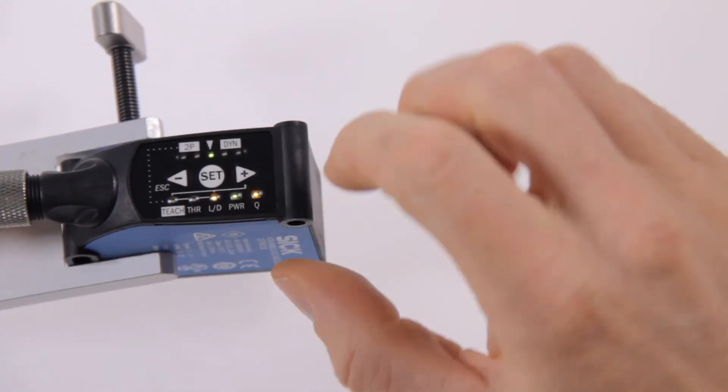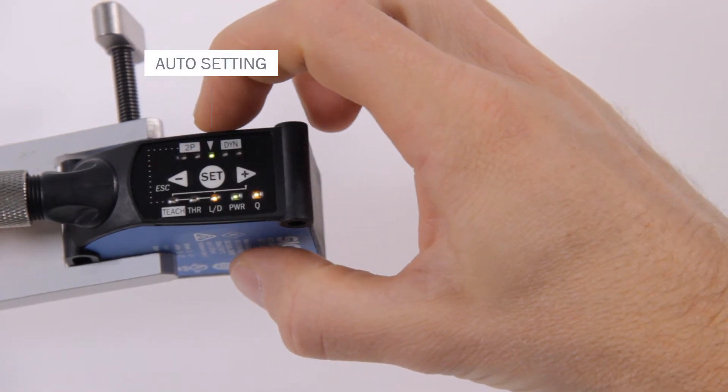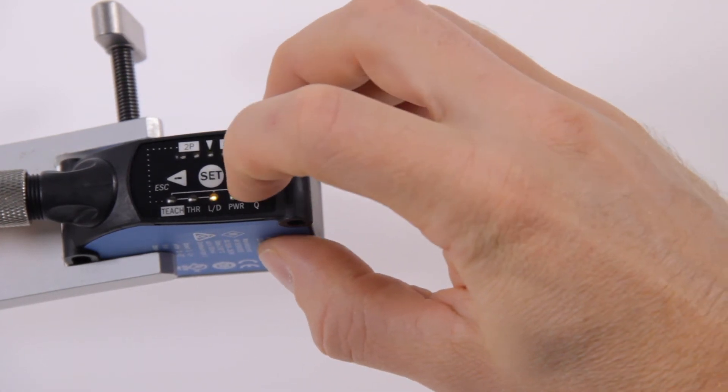The green LED below the arrow symbol is on. This is the auto setting of the sensor. Use the plus and minus buttons to switch between light and dark switching.